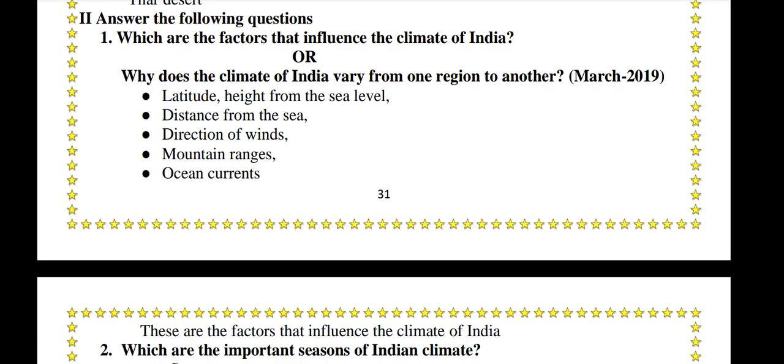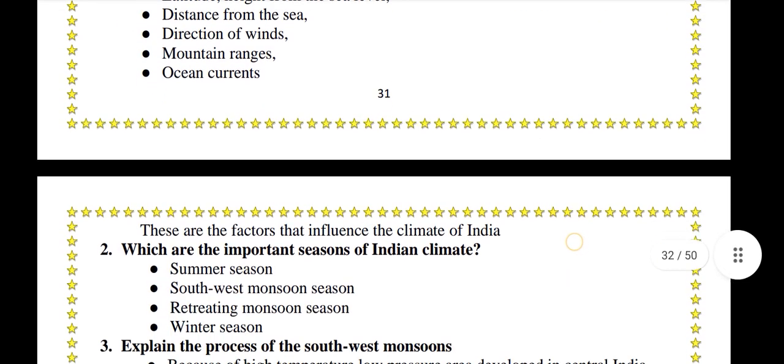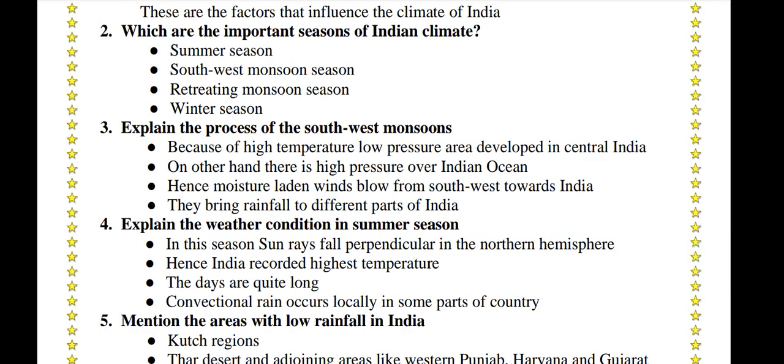Which are the factors that influence the climate of India, or why does the climate of India vary from one region to another? Latitude, height from sea level, distance from the sea, direction of winds, mountain ranges, and ocean currents are the factors that influence the climate of India. What are the important seasons of Indian climate? Summer season, Southwest monsoon season, retreating monsoon season, and winter season.